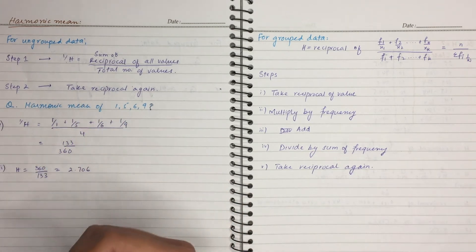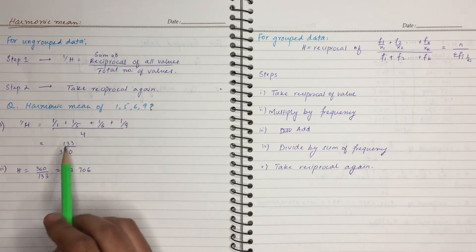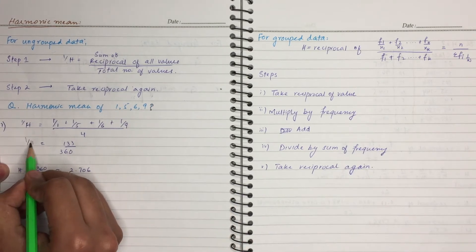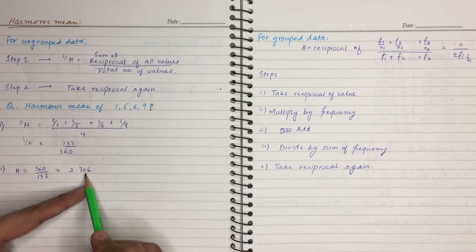After solving this, there is a value that is 133 by 360. Now, we have to take the reciprocal of this value. 1 over H has come to us. So, if we take the reciprocal of this, it is 360 by 133, 2.706.